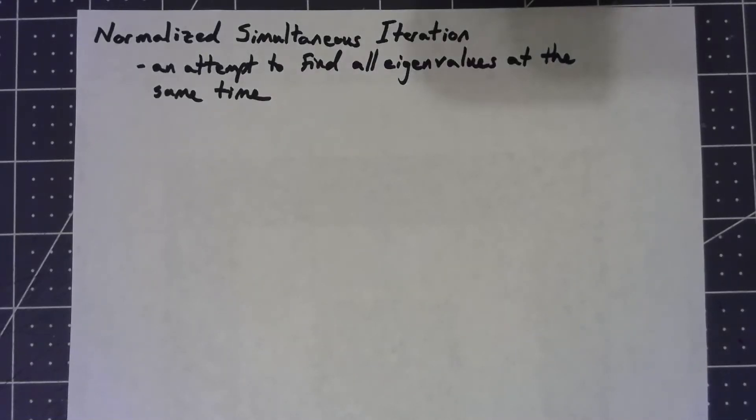In the previous videos we talked about how to use power iteration and some modifications to find eigenvalues and eigenvectors. The problem was that process only worked for one at a time, and one of the modifications was to do a shift and find a different one that way, but even that had problems so we had to guess what the shift was or repeatedly try different things until we found one that worked.